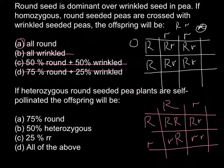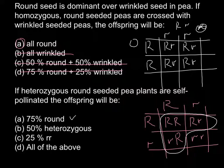As you can see, 75% — 3 out of 4 — are going to be phenotypically round, so answer A is correct. Let's check the other answers. 50% would be heterozygous: 2 out of 4 are heterozygous (small r, capital R), so we also have such seeds and they represent 50%, meaning this is also a correct answer.